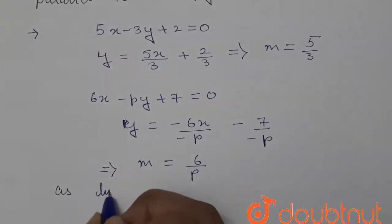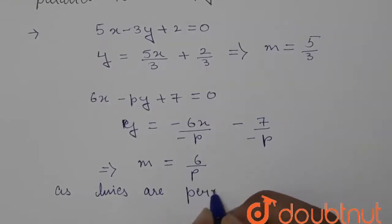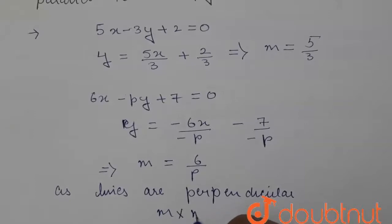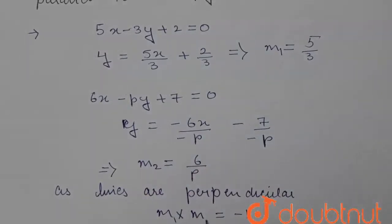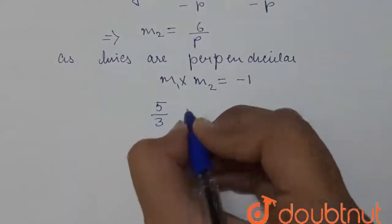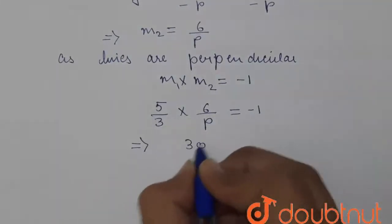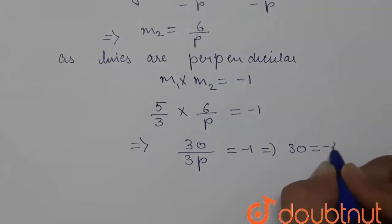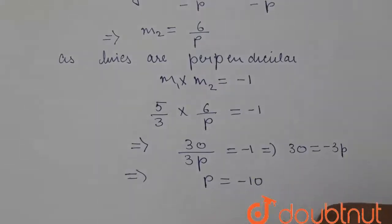Now, as the lines are perpendicular, therefore m₁ × m₂ = -1. So (5/3) × (6/p) = -1. This gives 30/3p = -1, which implies 30 = -3p. So from here, we get the value of p as -10.